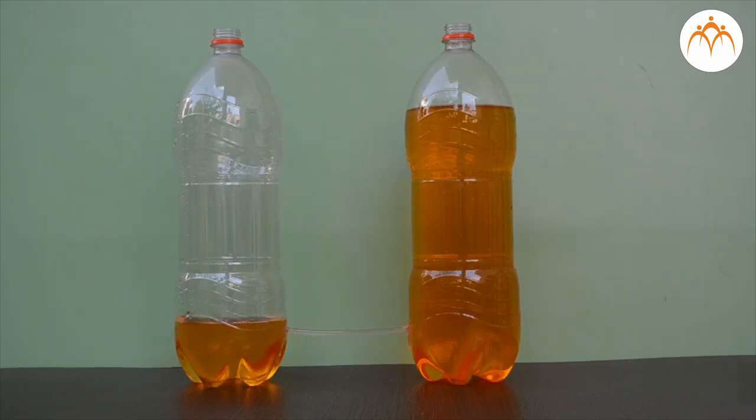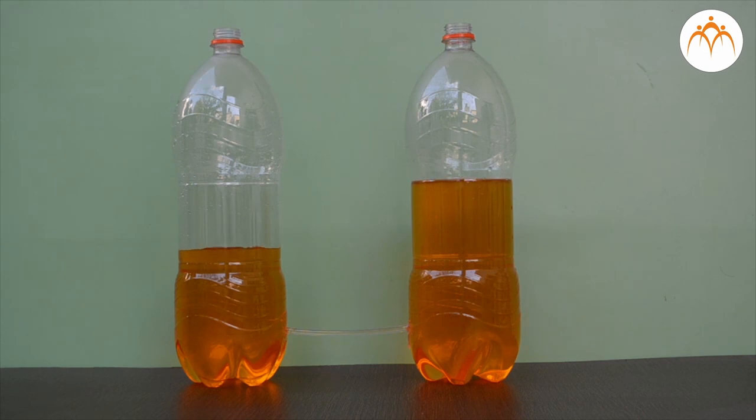Two bottles with water at different levels result in pressure difference. If you connect these bottles with pipe, water flows from higher pressure to lower pressure. When two levels become equal, there is no flow of water as pressure difference is zero. We can say that there is no current flow when potential difference is zero.